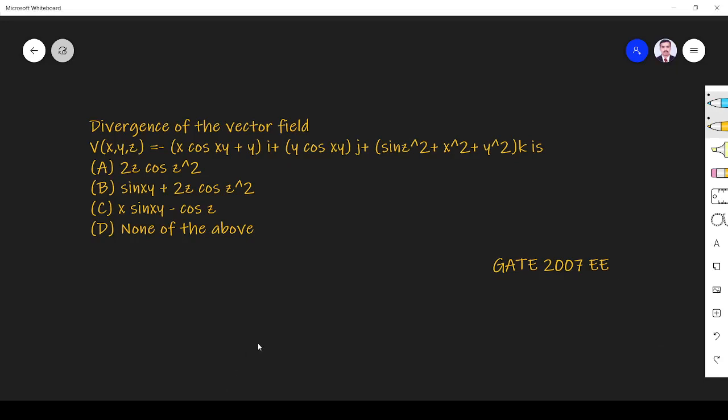Hi friends, in this video let us learn about Electromagnetic Problems Asked in Gate 2007 EEE paper. The question is related to divergence of vector field.